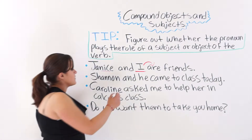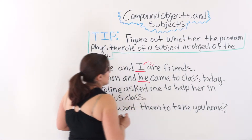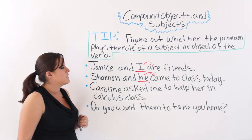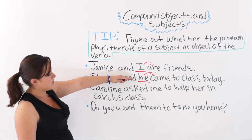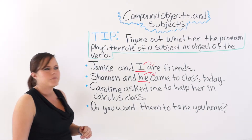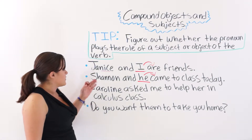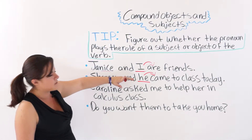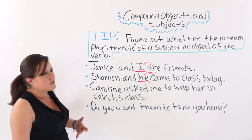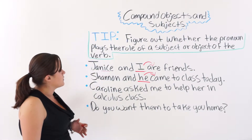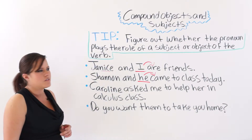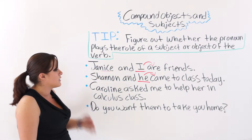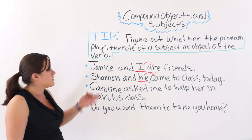The next one says 'Shannon and he came to class today.' Here, 'he' is the subject of the verb. Some people consider taking away the first noun to see if it makes sense — for example, 'he came to class today' does make sense. But the first example, 'I are friends,' would not make sense without 'Janice.' Not all compound objects and subjects work that way.